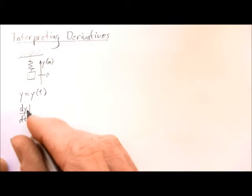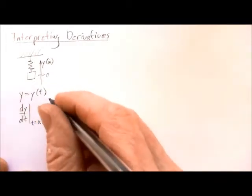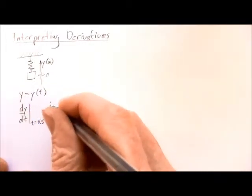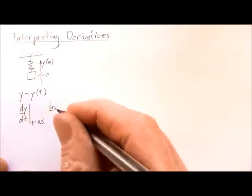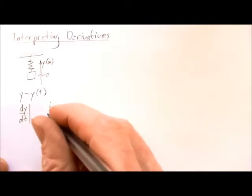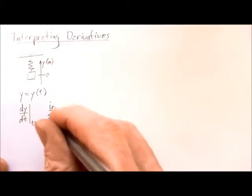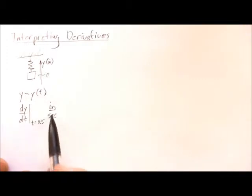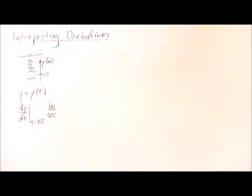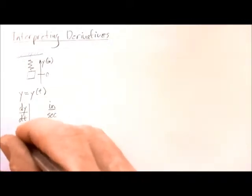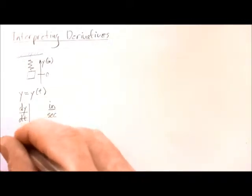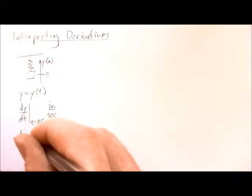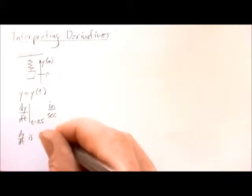The units: the change in y, since the height units are in inches, is going to be in inches. And the time change, because time is measured in seconds, is going to be in seconds. So the units of the derivative will be in inches per second, which we should recognize as a velocity. So dy/dt is velocity in this case.